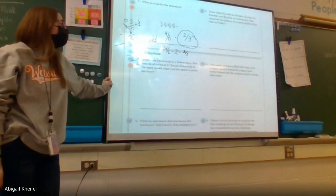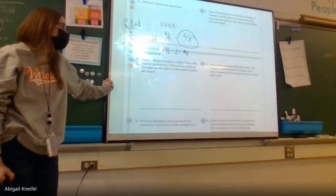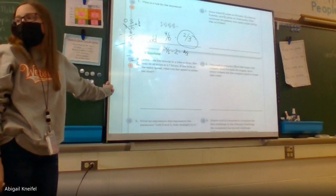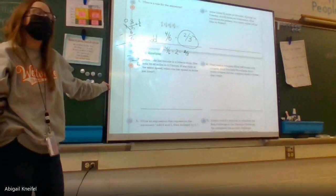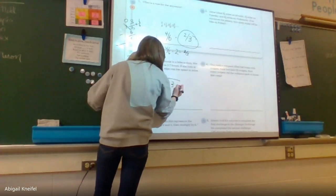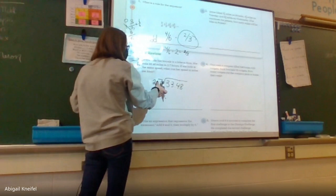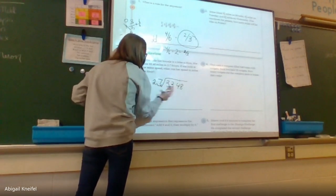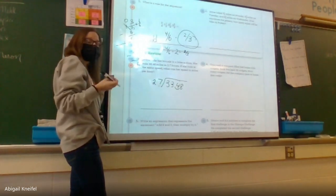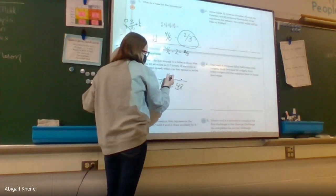Jaylen rode her bicycle in a bike-a-thon. She rode thirty-three and forty-eight hundredths miles in two and seven tenths hours. If she rode at the same speed, what was her speed in miles per hour? We already have a total, so we're going to divide. Can I start dividing right now? No — I cannot have a decimal in the divisor, so I move the decimal over one place in both the divisor and dividend. How many times can twenty-seven go into thirty? Zero times.